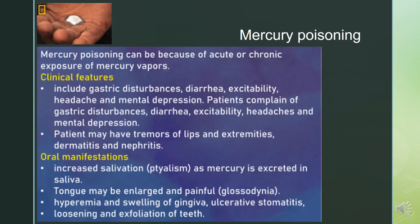Mercury poisoning can occur due to acute or chronic exposure to mercury vapors. Clinical features include gastric disturbances, diarrhea, excitability, headache, and mental depression. Oral manifestations include increased salivation, as mercury is excreted in saliva.